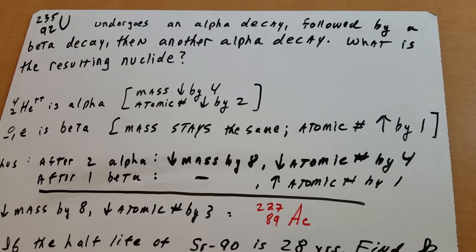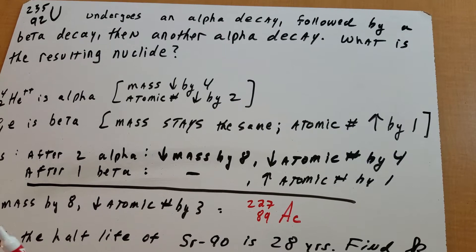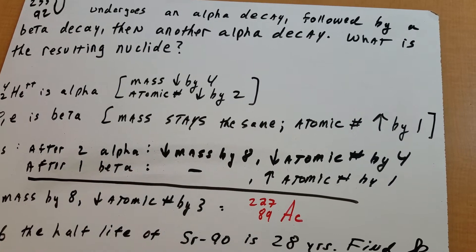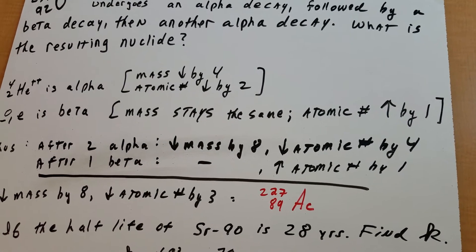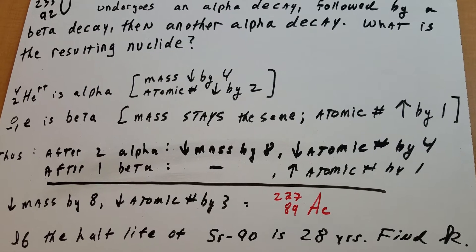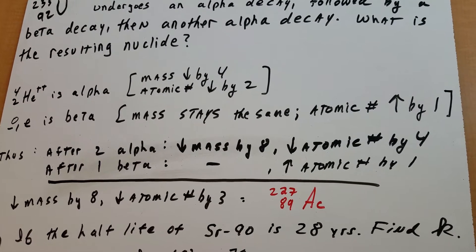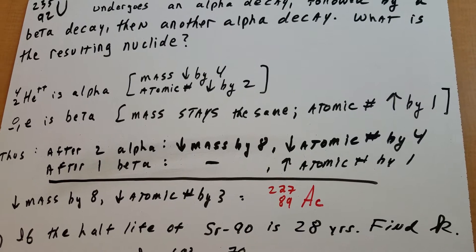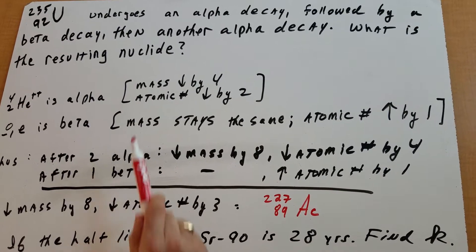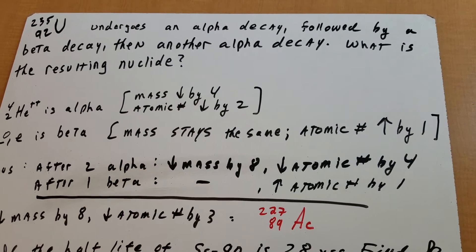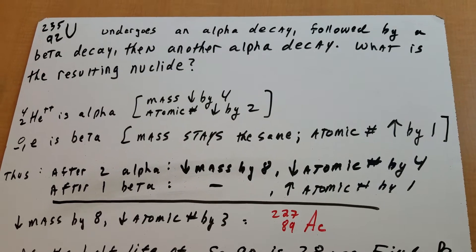The first thing we need to do is to understand what is an alpha particle. And as you can see, 4,2 helium with a plus 2 charge is an alpha particle. It's nothing more than a helium nuclei stripped of its electrons. In each alpha decay, the mass goes down by 4, and the atomic number goes down by 2.